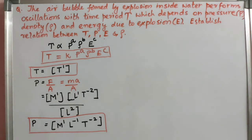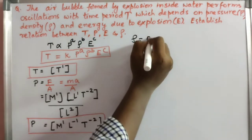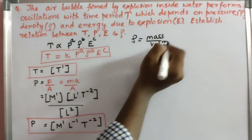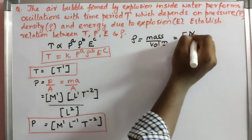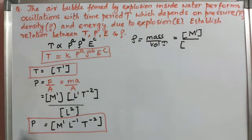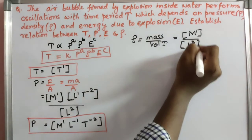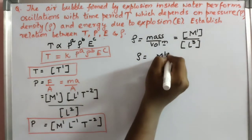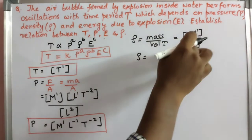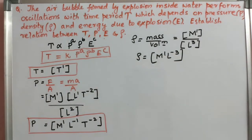Next, density rho. Density equals mass divided by volume. Dimensional formula for mass: M¹. Dimensional formula for volume: length × breadth × height = L³. So the dimensional formula for density rho is M¹ · L⁻³ (since L³ in denominator goes to numerator as L⁻³).